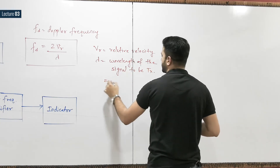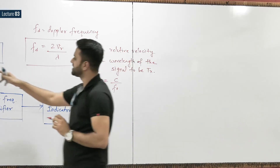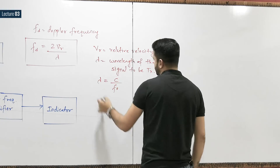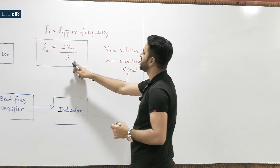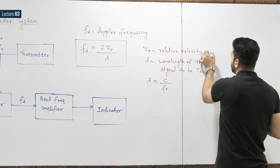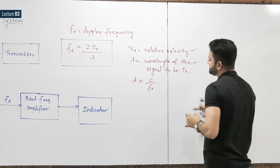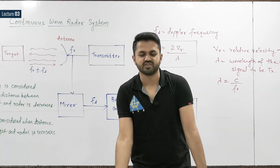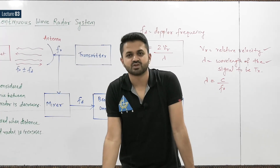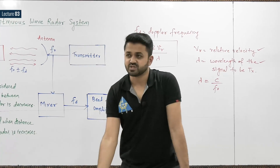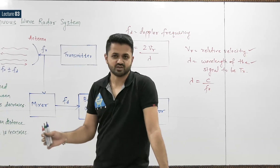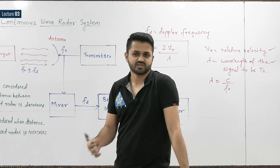The wavelength λ = c / F0, where F0 is the frequency of the transmitted signal. So the Doppler frequency formula is Fd = 2·Vr / λ = 2·Vr·F0 / c. This continuous wave radar system is based on the principle of Doppler frequency. This is all about the basics of radar. Now we will solve some workbook questions. Thank you.